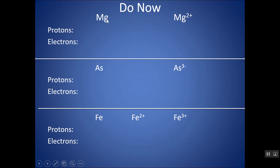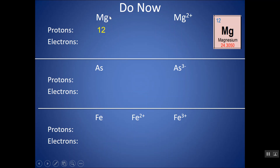Now let's check our work. If I look at magnesium on the periodic table, it has an atomic number of 12. There's always that little key on your periodic table if you forget what these numbers mean — the atomic number gives you the number of protons. So in an atom, notice there's no charge in the top right-hand corner; there would be 12 protons and 12 electrons. They cancel each other out, so it would overall be neutral with zero net charge.